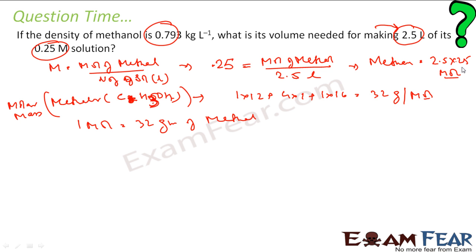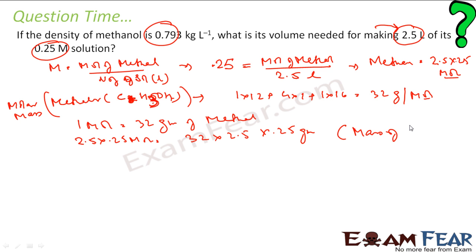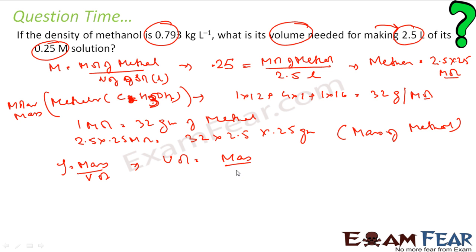I have 2.5 × 0.25 moles, so that is 32 × 2.5 × 0.25 grams of methanol. This is my mass of methanol. Now I need the volume of methanol, so volume is mass divided by density. Mass is 32 × 2.5 × 0.25 grams, and density is 0.793 kg per liter.